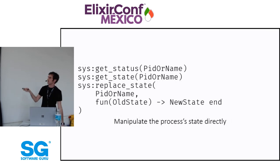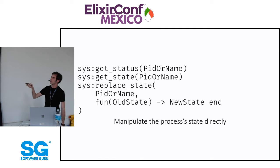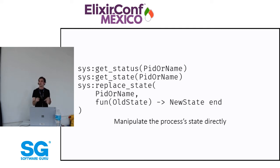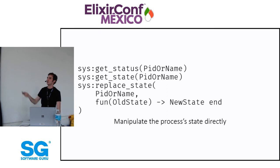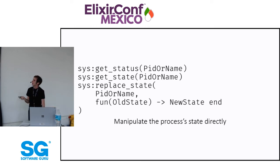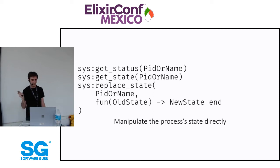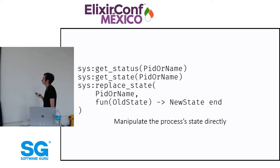Then you get the even fancier stuff. GetStatus lets you know a bunch of details. GetState lets you see the internal state — the thing you set after every reply or no-reply call. And replace_state lets you change the state of the server on the fly in production without interruption. I haven't done it many times, but it's really weird and scary when you do it — though it's nice to know it's there.